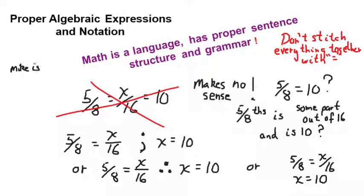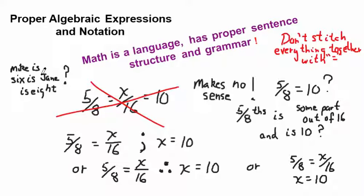I mean, that's like saying, Mike is 6, is Jane is 8. Who the heck talks like that? Mike is 6, is Jane is 8? No, you'd put a period, or a separate line, or something, right? Mike is 6, period. Jane is 8, period. You wouldn't say, Mike is 6, is Jane is 8. That just doesn't make sense. So anyway, watch how you, I mean, I know what you mean, and you know what you mean, but grammatically, it's wrong.